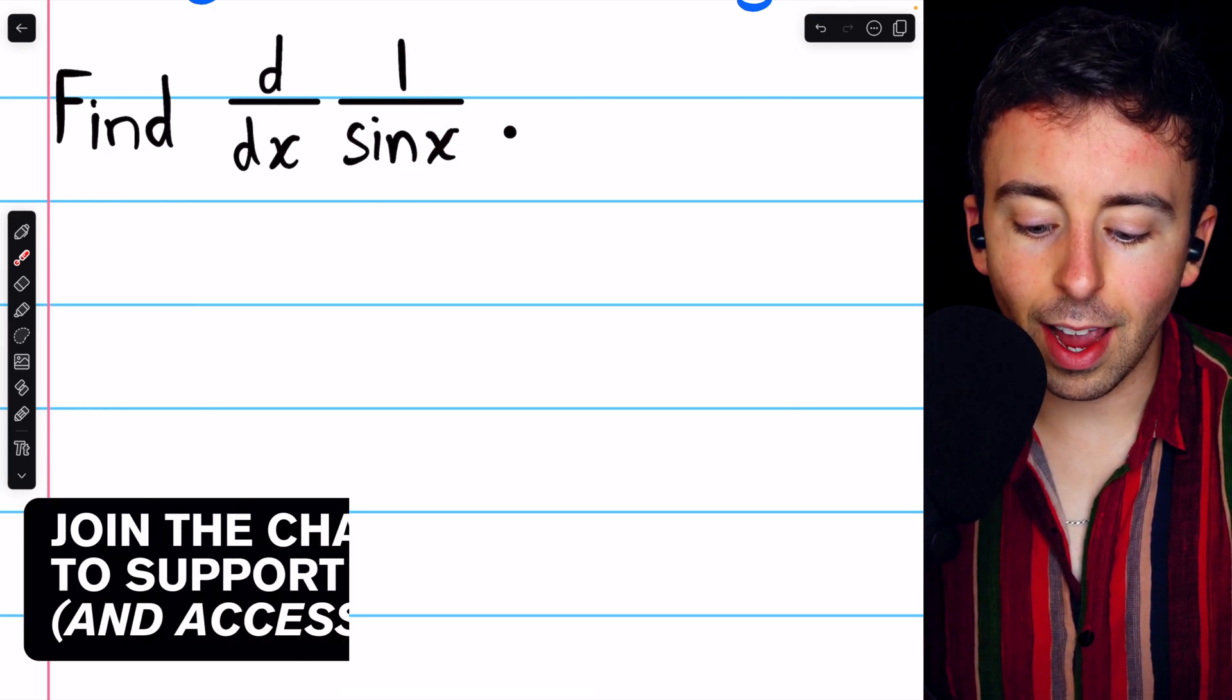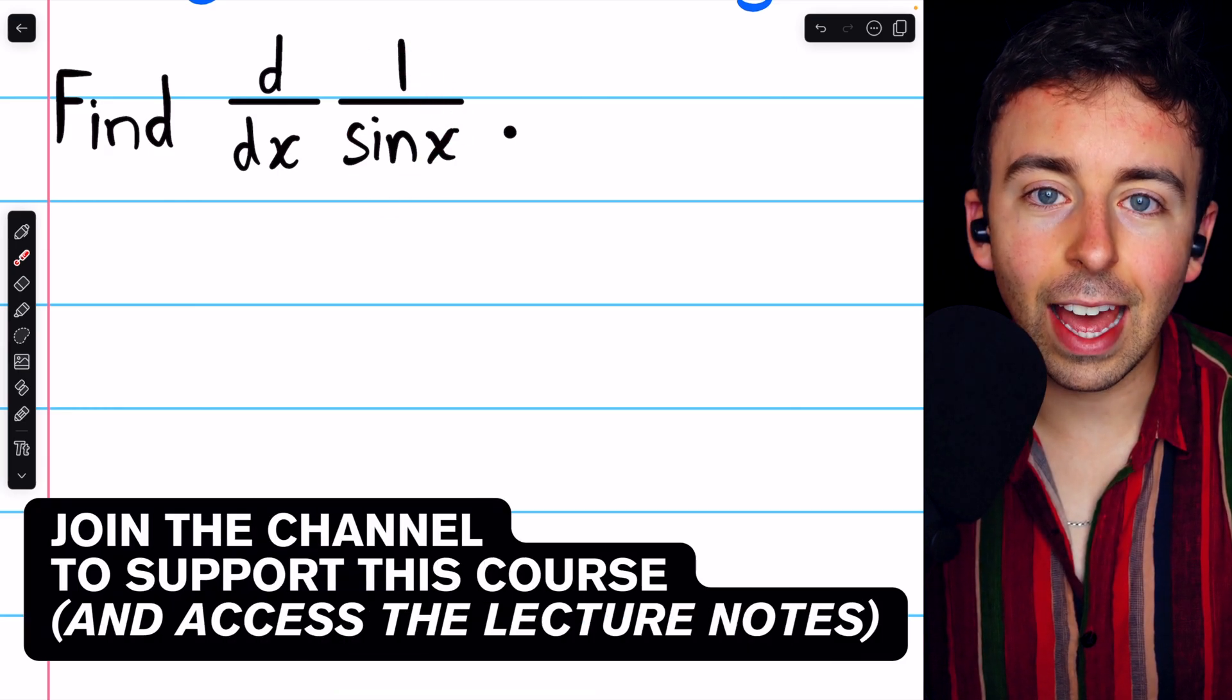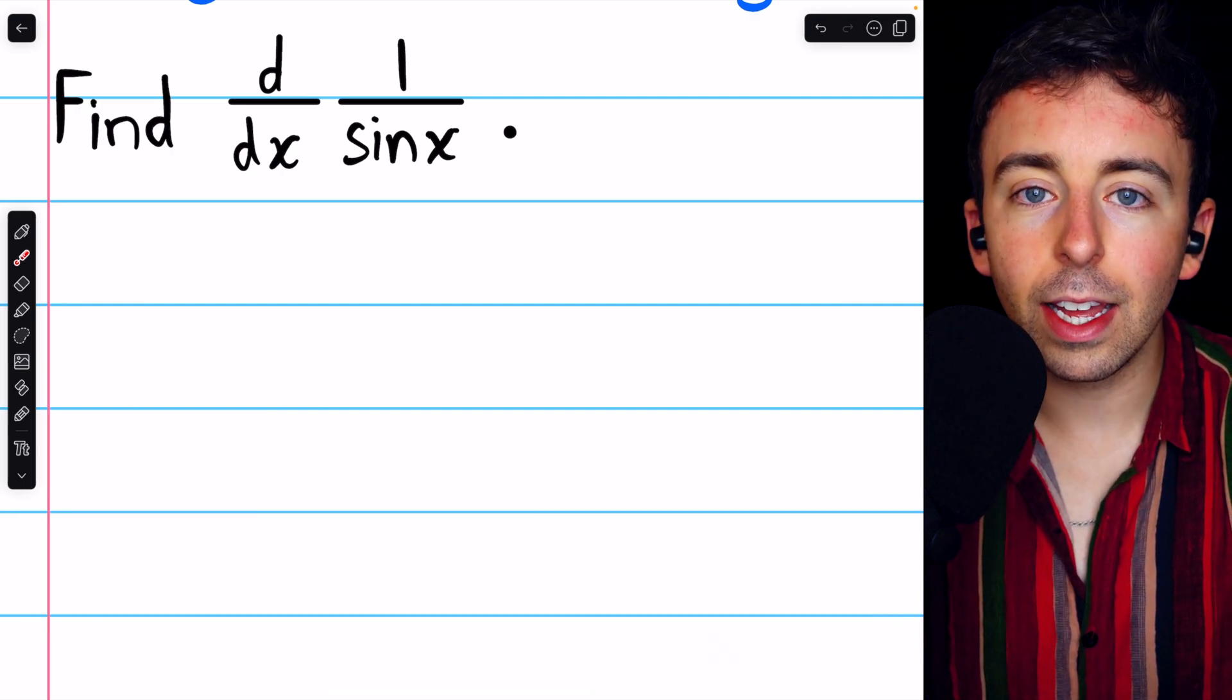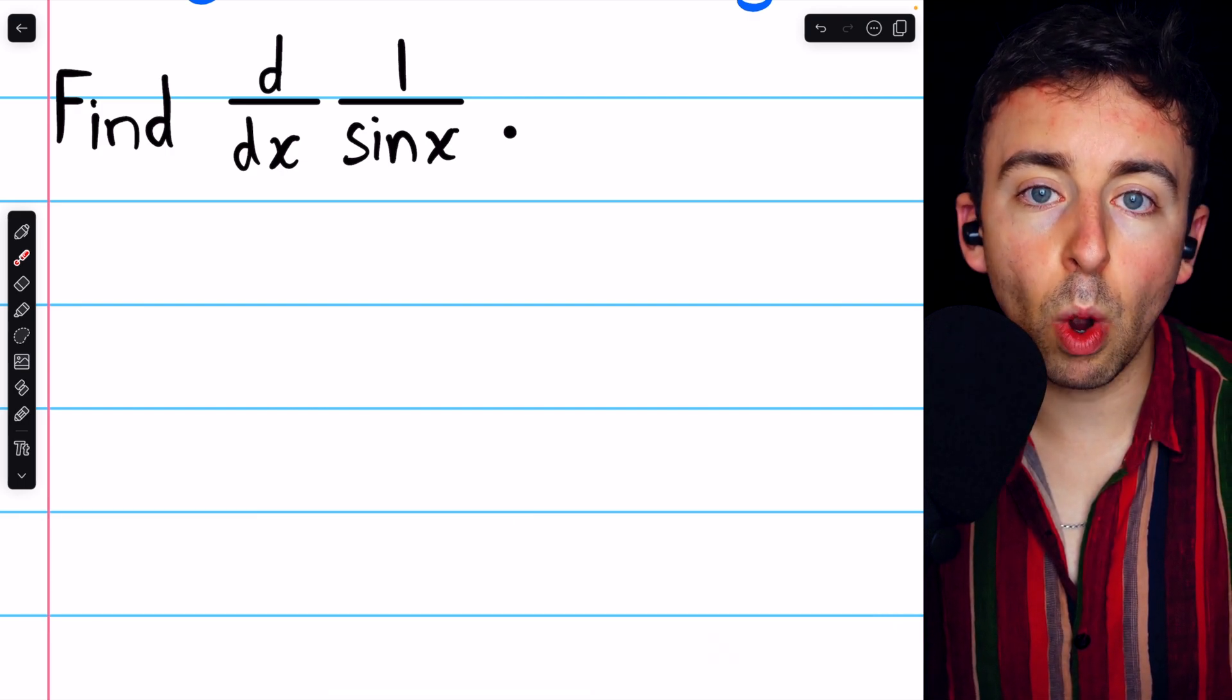You should know that 1 divided by sine x is cosecant x, and you should have its derivative memorized. But if you don't know it yet, we can figure it out by using the quotient rule.